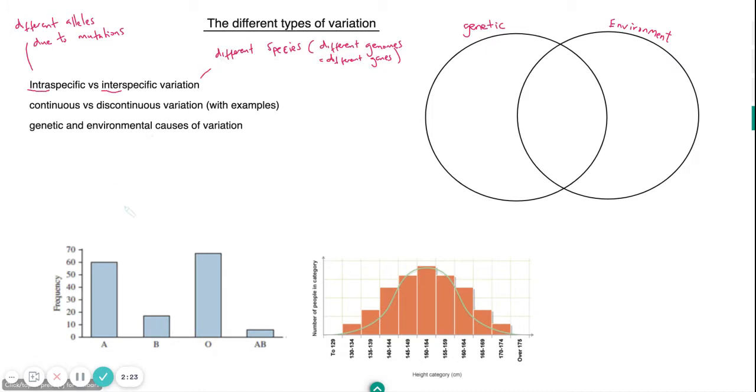Let's focus just on intraspecific variation, so variation within the species. We've got an example here on the right which is showing on the x-axis height and the number of people. We can see here this is what's called continuous variation, and the reason why it's continuous is because we have two extremes. That's where our lowest numbers are, and most individuals fit within the mean, this middle group here.